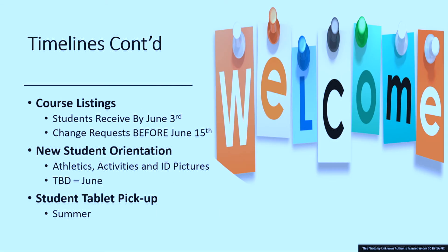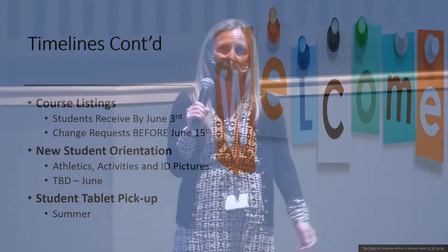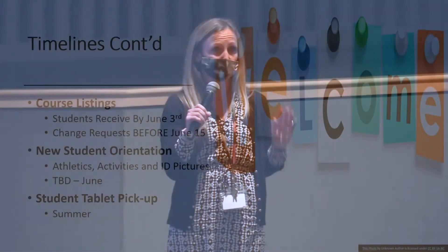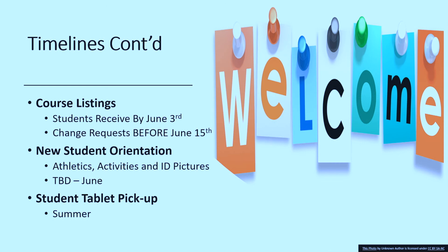Once you meet with your counselor and create your course wish list — reviewing data, testing, and what classes you'll take next year — students will receive their course listings by June 3rd. They will have until June 15th to request any changes. So if you had a change of heart, say you wanted Spanish but then decide you'd rather take French, you have close to a two-week turnaround to let your counselor know. That June 15th deadline is firm. Our counselors are not here in the summer, and it's challenging to make schedule changes, so we do have a policy: schedule changes need to be made by June 15th.